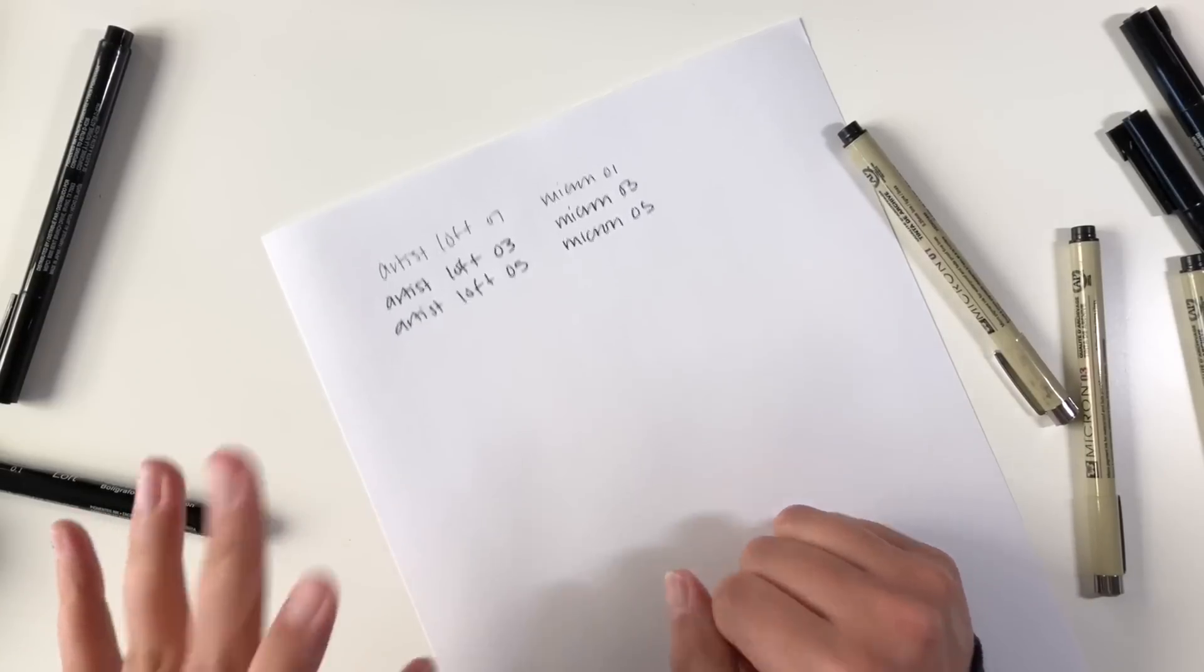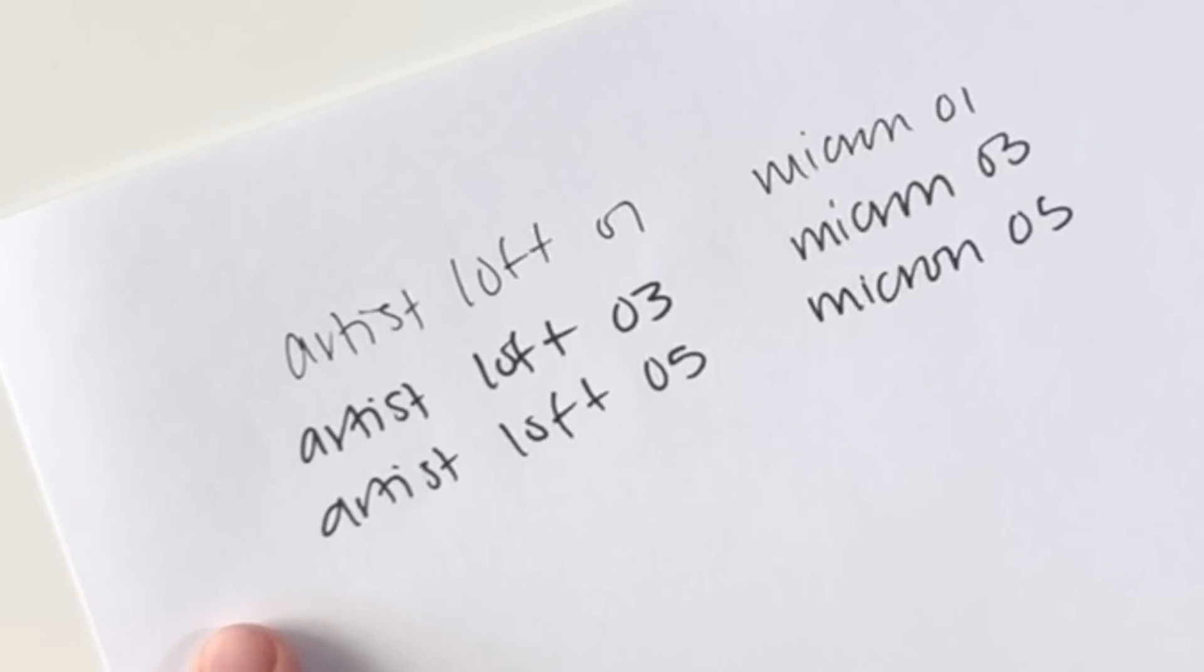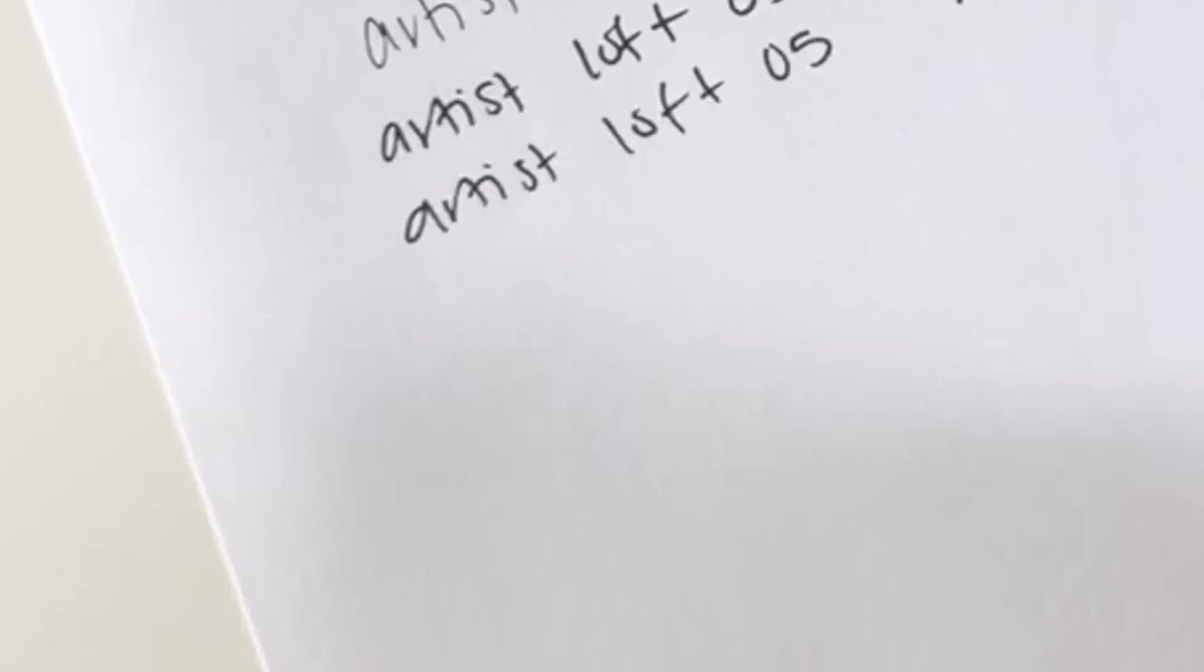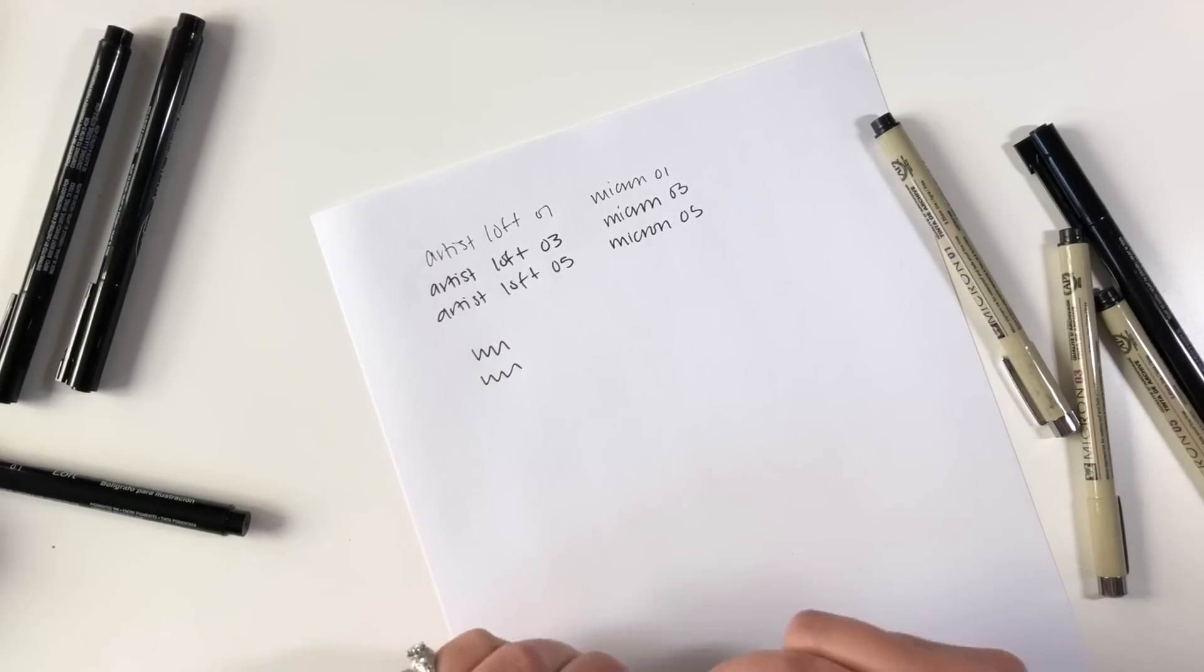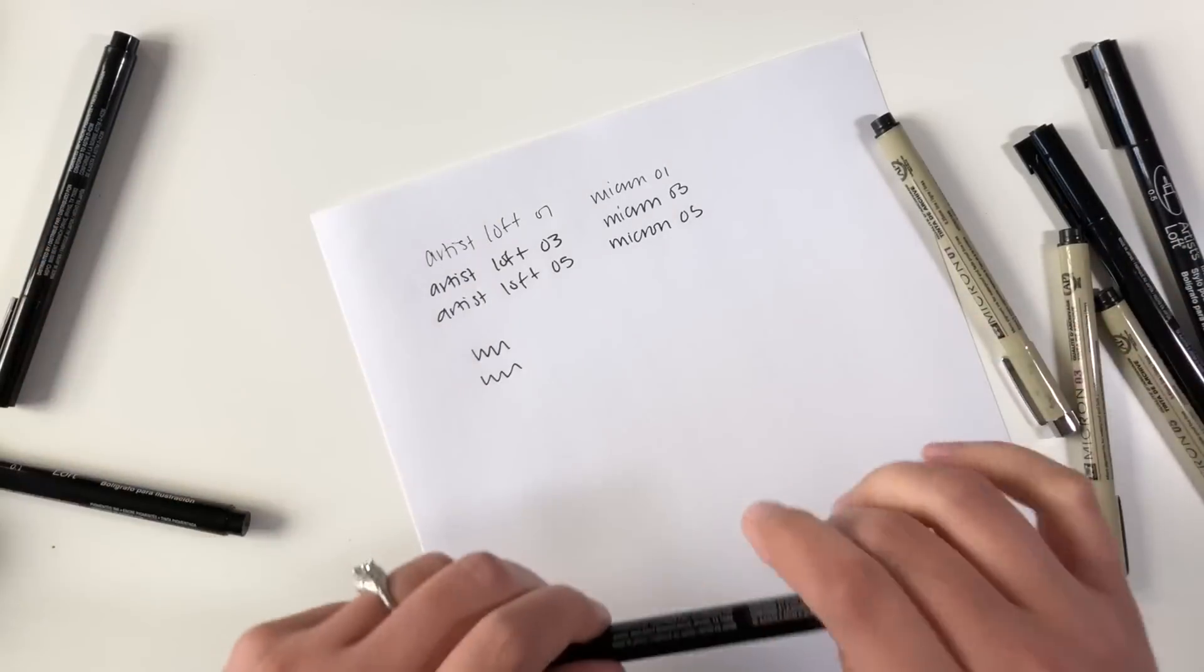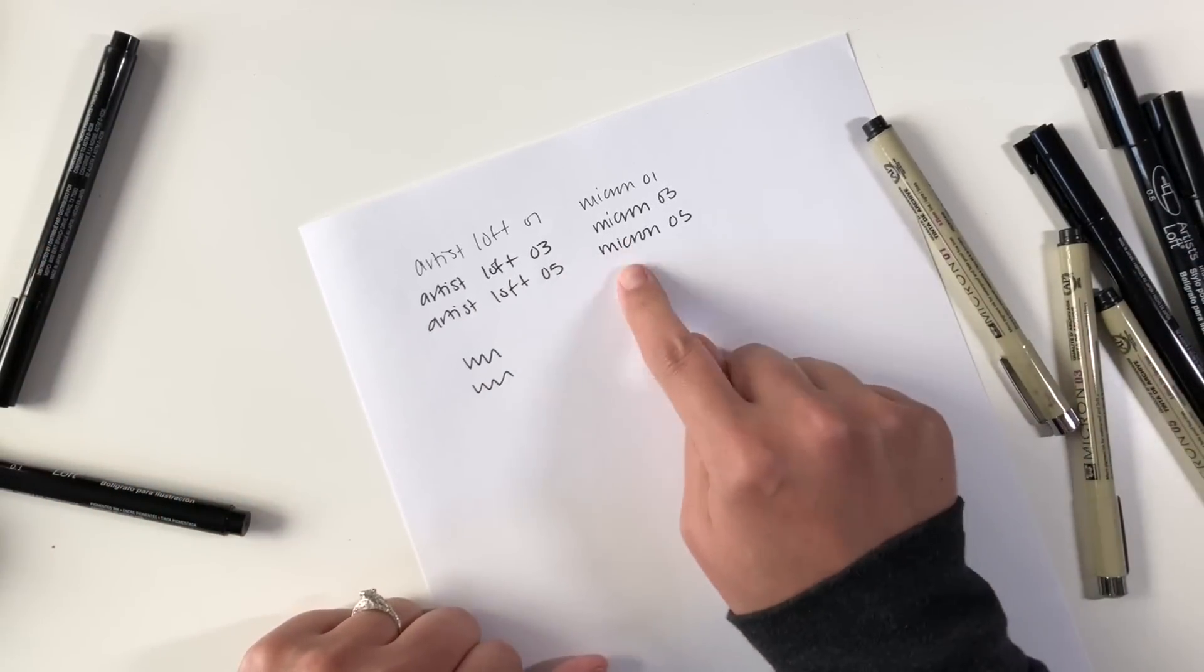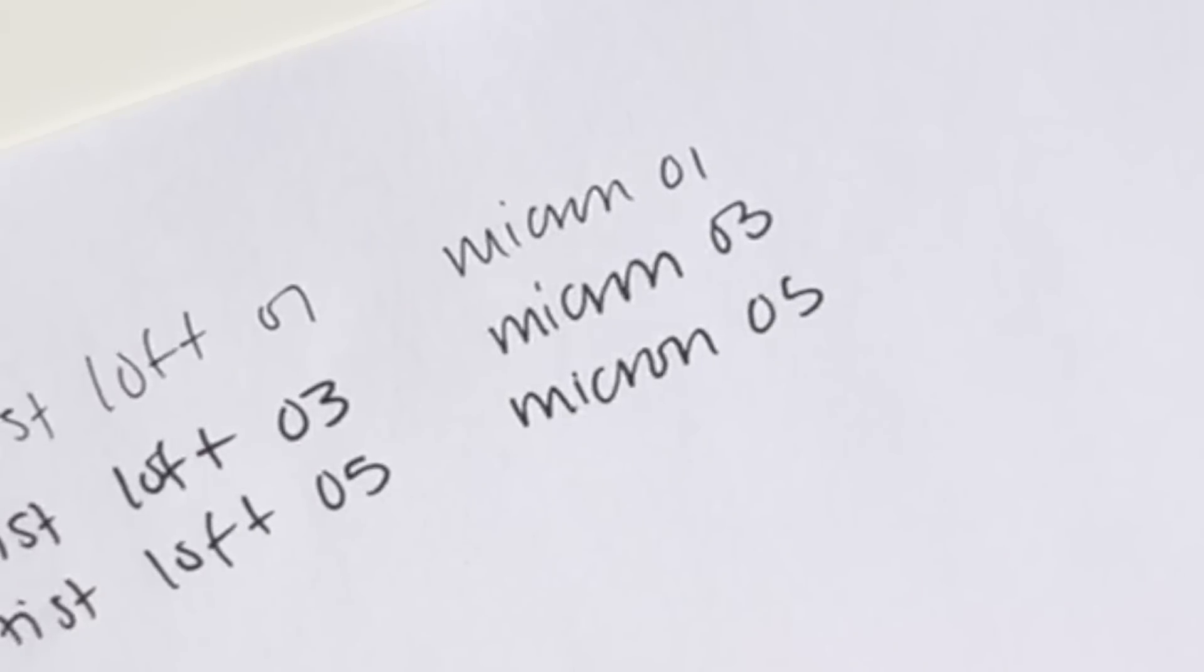Immediately from looking at these, I can tell you right now that I don't see a difference between the 0.3 and the 0.5 Artist Loft. They look exactly the same. They don't feel exactly the same. The 0.3 feels flimsier than the 0.5, but they look exactly the same. And you can see with the Microns that there is a difference. It's subtle, but there is a difference between the 0.5 and the 0.3.